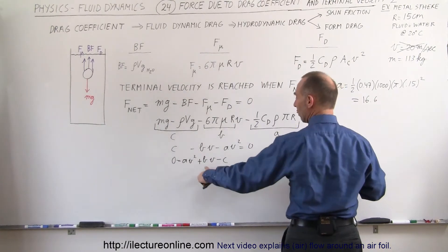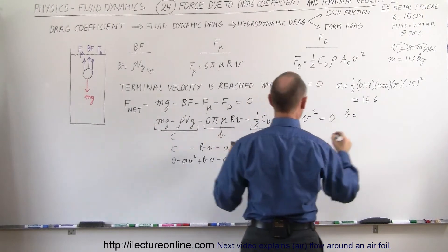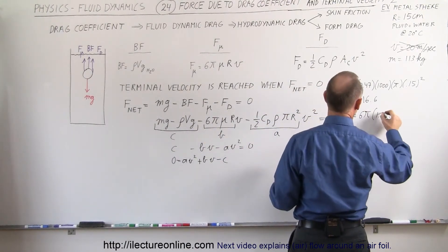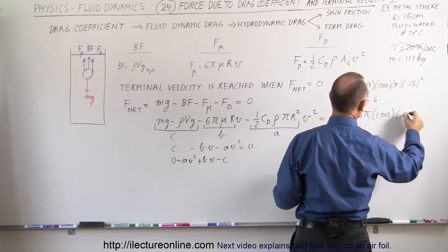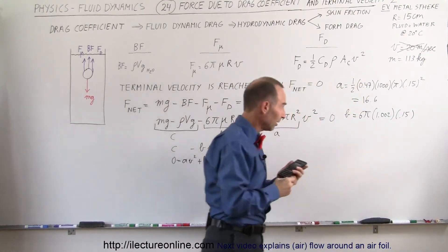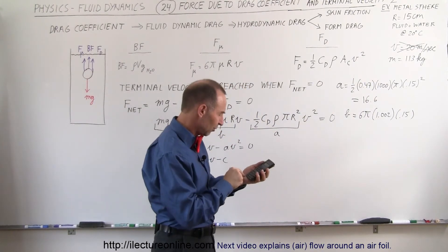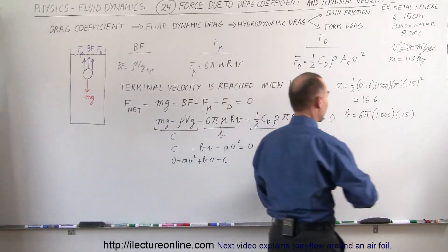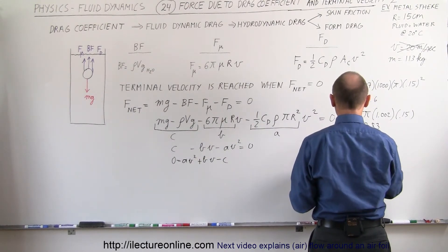B is the coefficient of the V term: B equals 6π times mu, where mu is 1.002 × 10⁻³ for water at 20 degrees centigrade, times the radius 0.15 m. Calculating: 6 × π × 1.002 × 10⁻³ × 0.15 = 2.83.